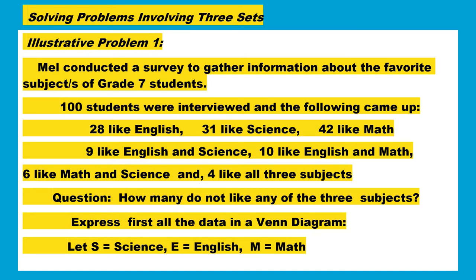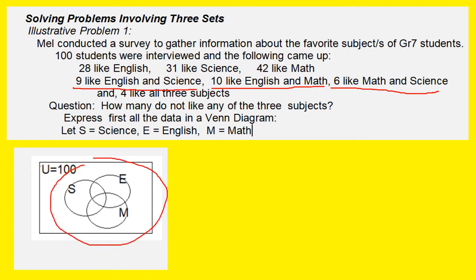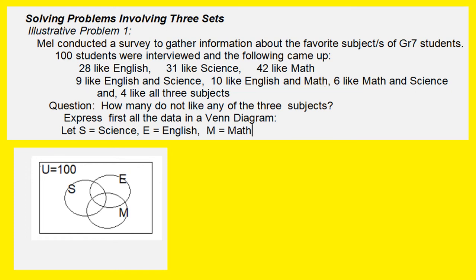The first thing to do is express all the data in a Venn diagram. Let us assign letter S as Science, letter E as English, and M as Math. So the first thing to do is draw three overlapping circles, because there is mention here that 9 like English and Science, 10 like English and Math, and 6 like Math and Science. Therefore, you need to make three overlapping circles.